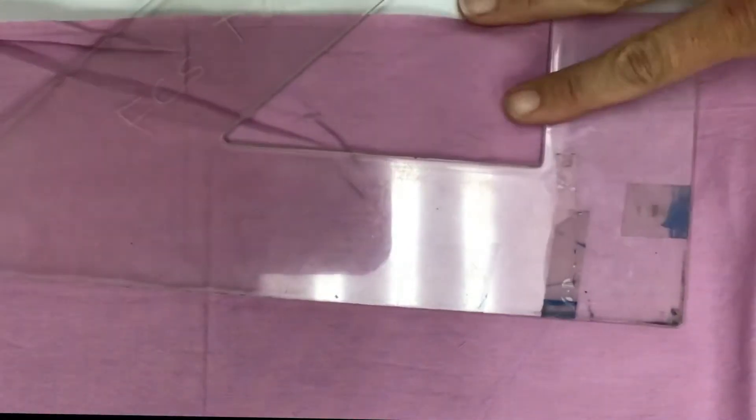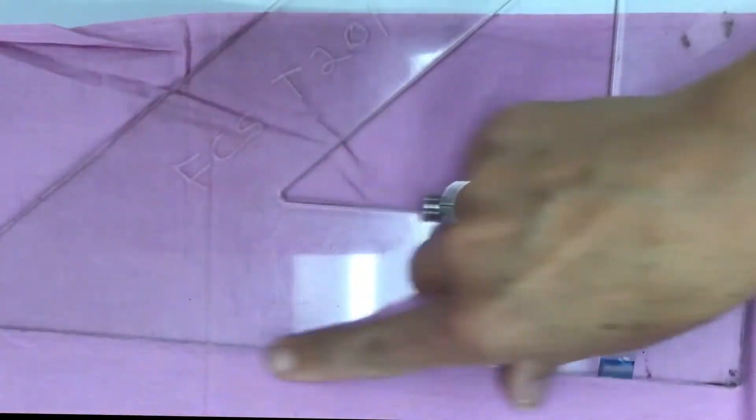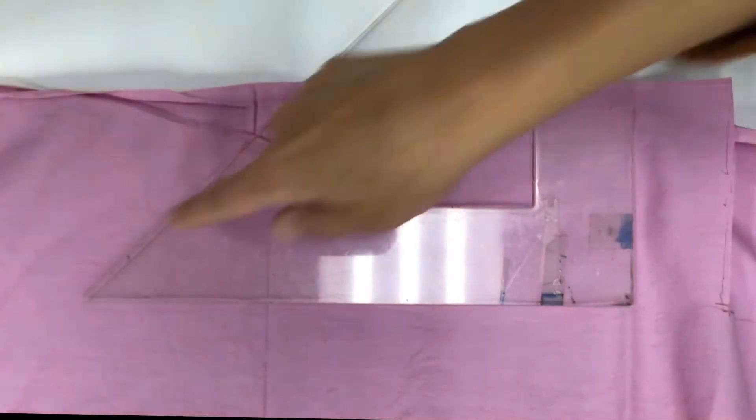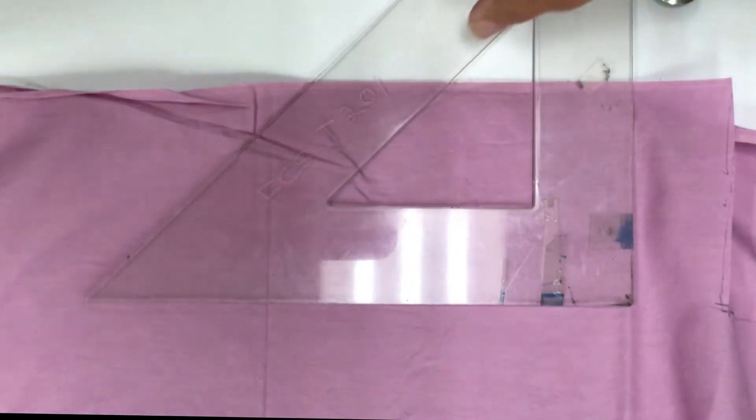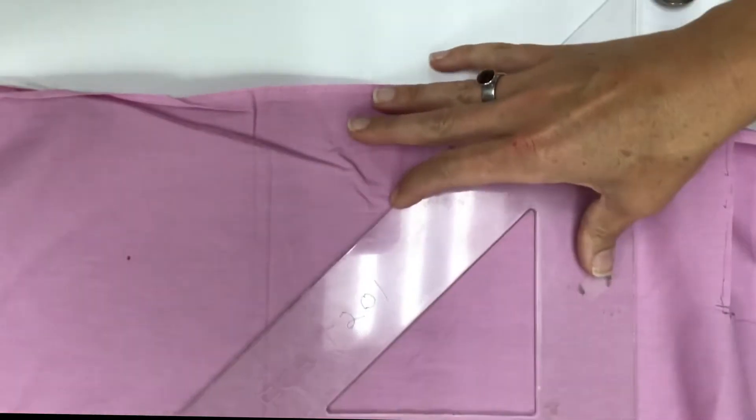It can be helpful to have a triangular shaped ruler and then if you know where your grain line is you line up the edge of the ruler to the grain line. Then you can just trace down the 45 degree angle. That can be really helpful.